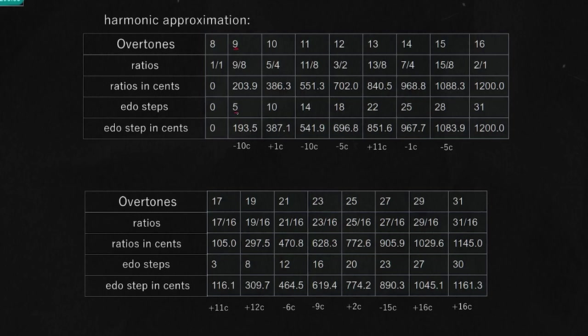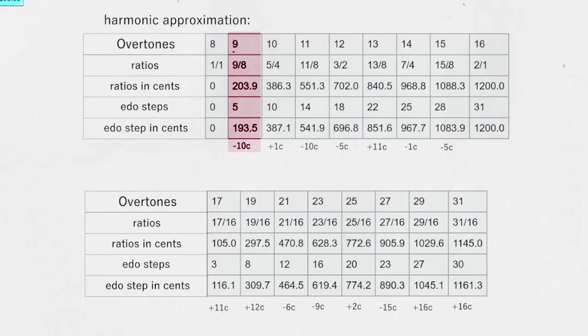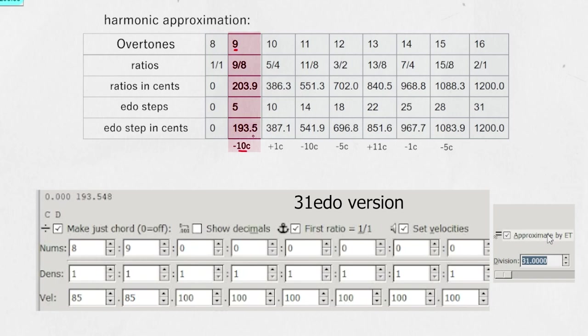So for instance, our ninth harmonic approximation is going to be our fifth EDO step. It's actually going to be 10 cents flat because the one that we get in 31 equal exists at about 193.5 cents, but the actual just intonated 9-8 version is 204 cents approximately. This approximation of the ninth overtone, it doesn't really seem that bad. I mean, only 10 cents, but it really does make a significant difference in the sound. It kind of makes it sound more foggy and more warbly.